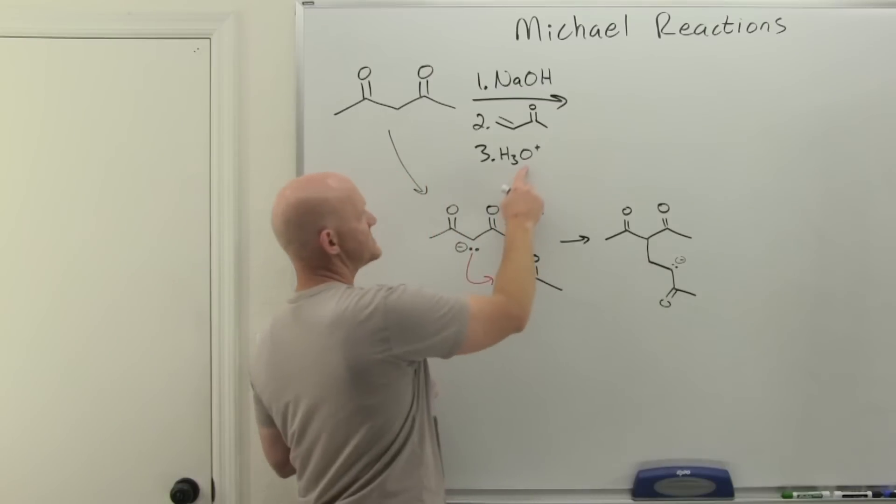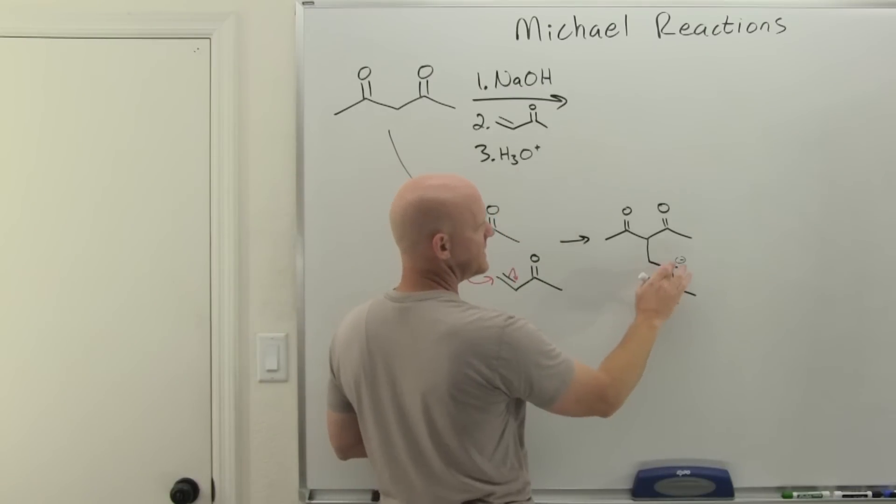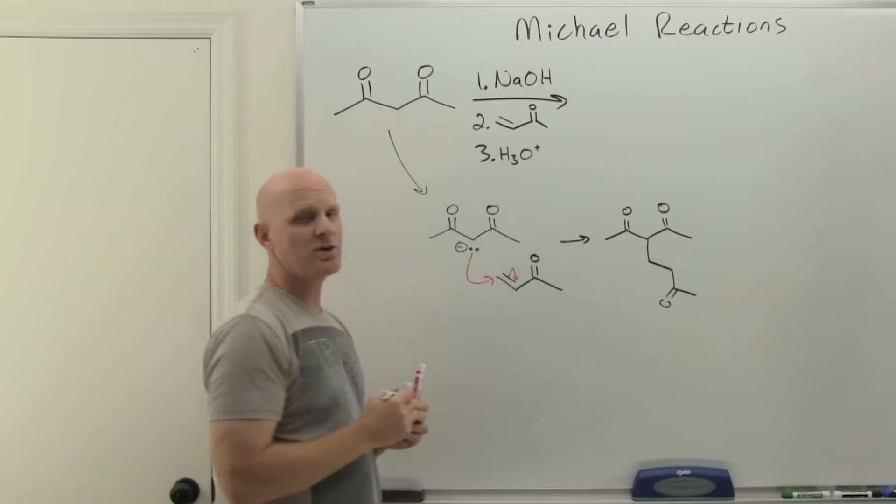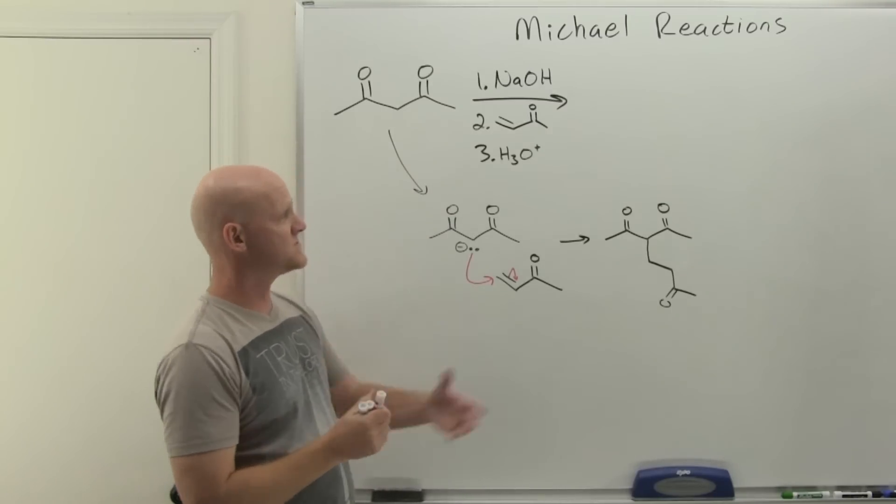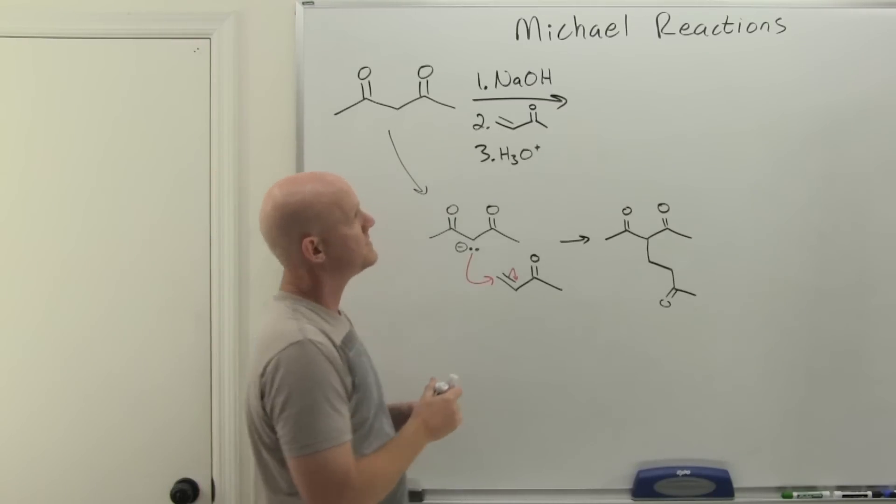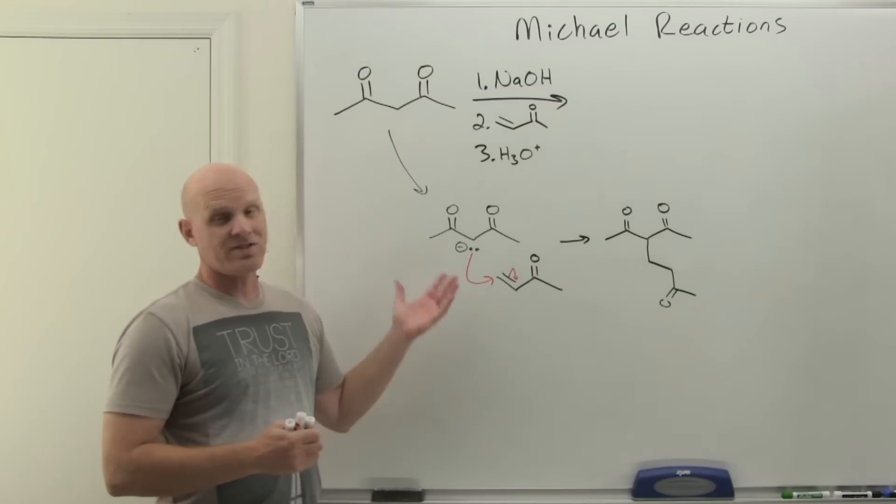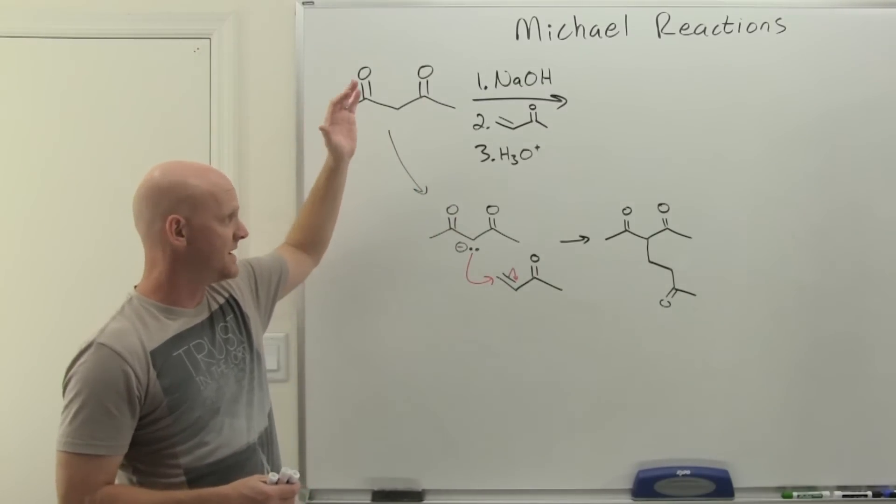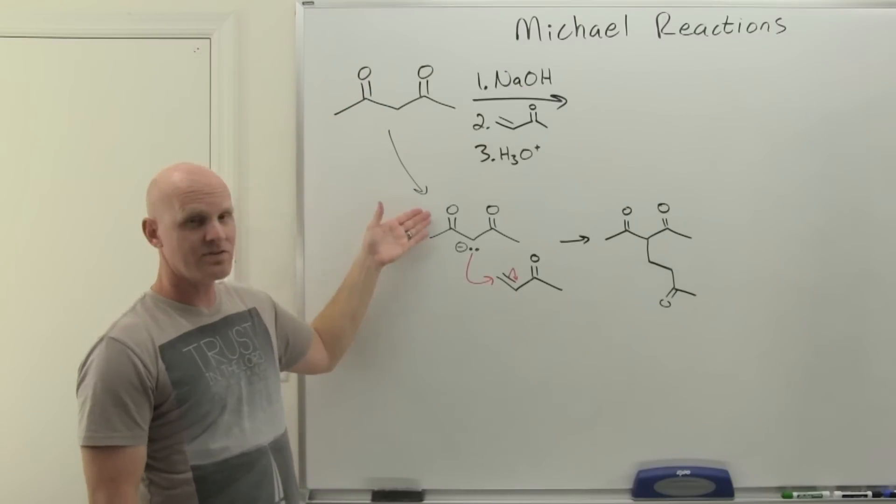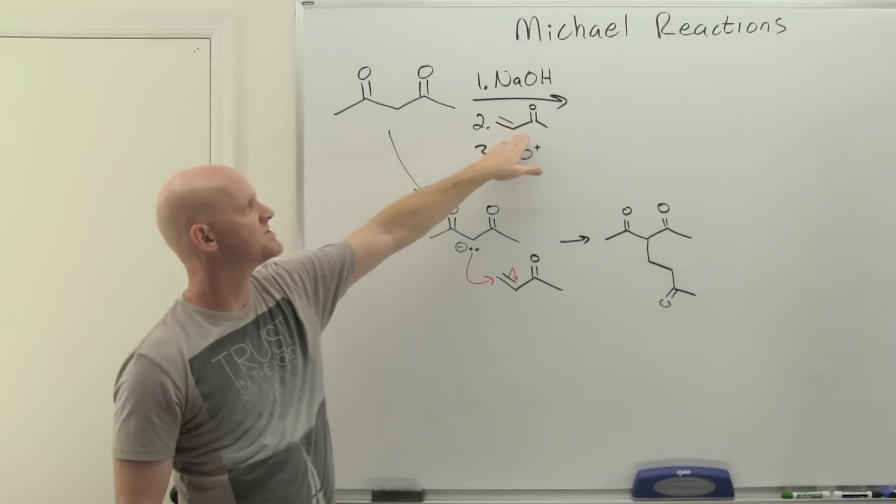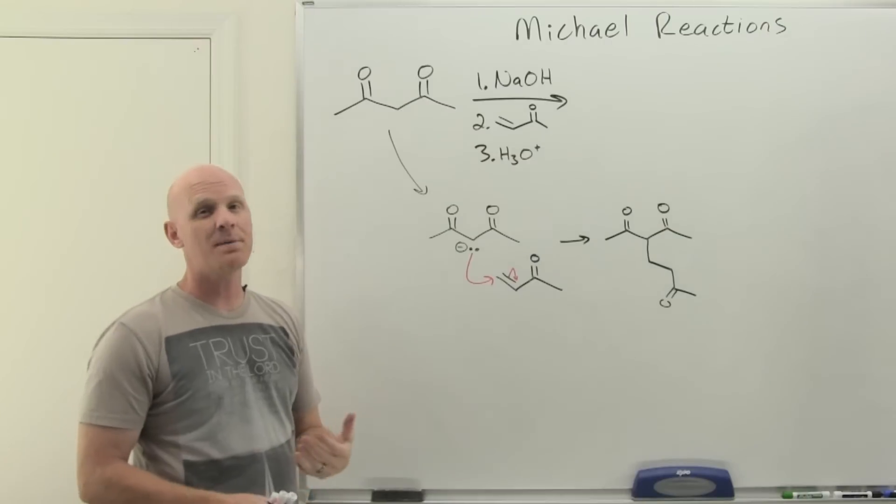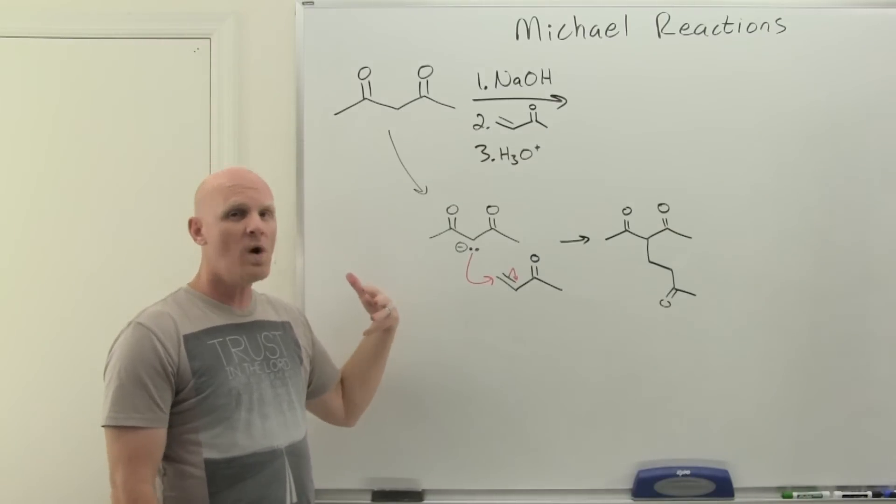So now we've attached to the beta carbon, we pushed electrons onto this atom giving it a negative charge, and it would be resonance stabilized—it's an enolate. When we add the H3O+, this is going to get protonated, adding an H to give you your final product. This would be the result of our Michael reaction. That's all there is to it—your big enolates are your Michael donor, your conjugated ketone was your Michael acceptor.